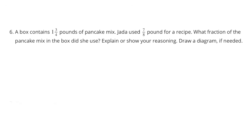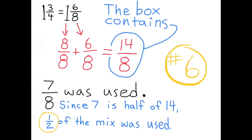Number 6. A box contains 1 and 3 fourths pounds of pancake mix. Jada used 7 eighths pound for a recipe. What fraction of the pancake mix in the box did she use? The box contains 1 and 3 fourths pounds, which is the same as 1 and 6 eighths. I can take that 1 pound and turn it into 8 eighths. 8 eighths plus 6 eighths equals 14 eighths. 14 eighths minus 7 eighths equals 7 eighths. Since 7 is half of 14, she used half of the mix.